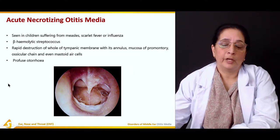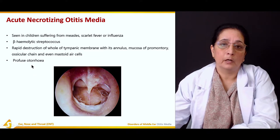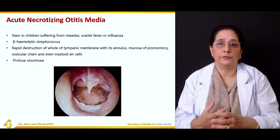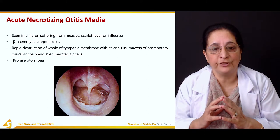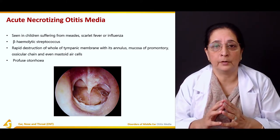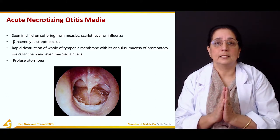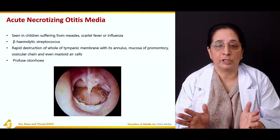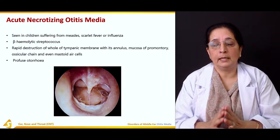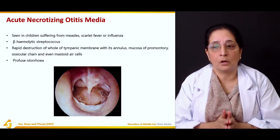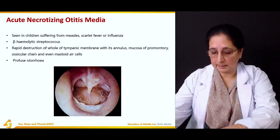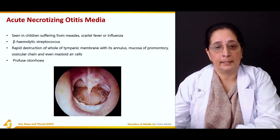There is profuse otorrhea — 'rhea' means flow and 'otto' refers to the ear — so there is a lot of discharge from the ear. There is complete destruction of the tympanic membrane along with the annulus, mucosa of the promontory, ossicles, and mastoid air cells.